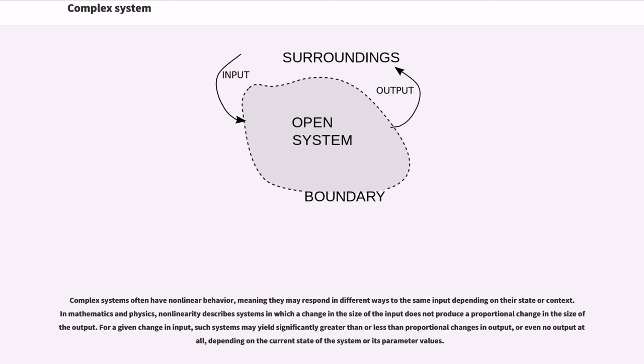Complex systems often have nonlinear behavior, meaning they may respond in different ways to the same input depending on their state or context. In mathematics and physics, nonlinearity describes systems in which a change in the size of the input does not produce a proportional change in the size of output.